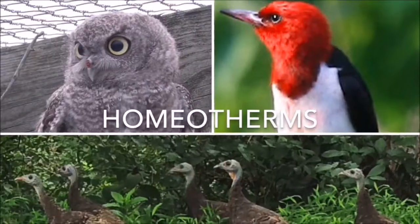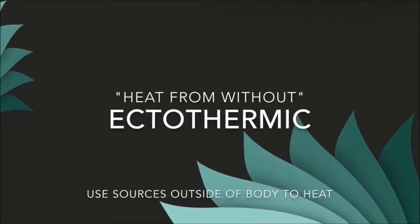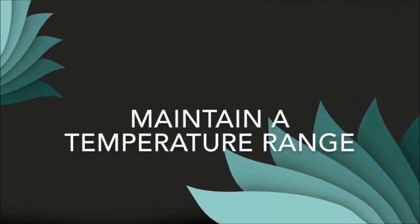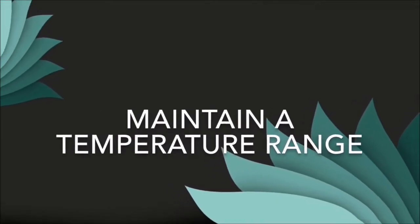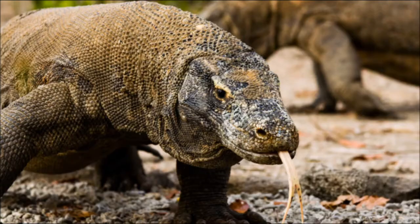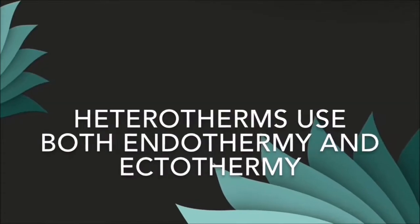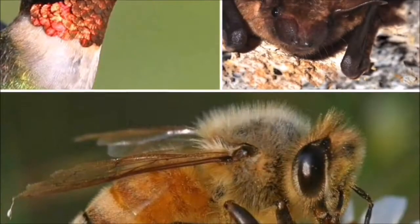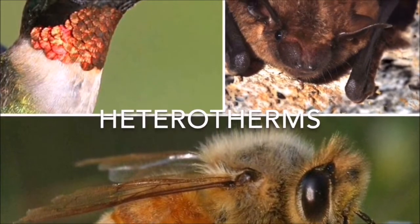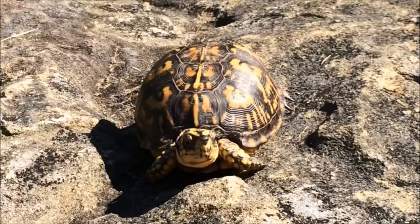While gaining heat from the environment is termed ectothermy, which results in a variable temperature called poikilothermy. Birds and mammals are homeotherms or warm-blooded. Fish, amphibians, reptiles, insects, and other invertebrates are poikilotherms or cold-blooded. And lastly, heterotherms employ both endothermy and ectothermy depending on environmental situations and metabolic needs. Some animals under this group include bats, bees, and hummingbirds.